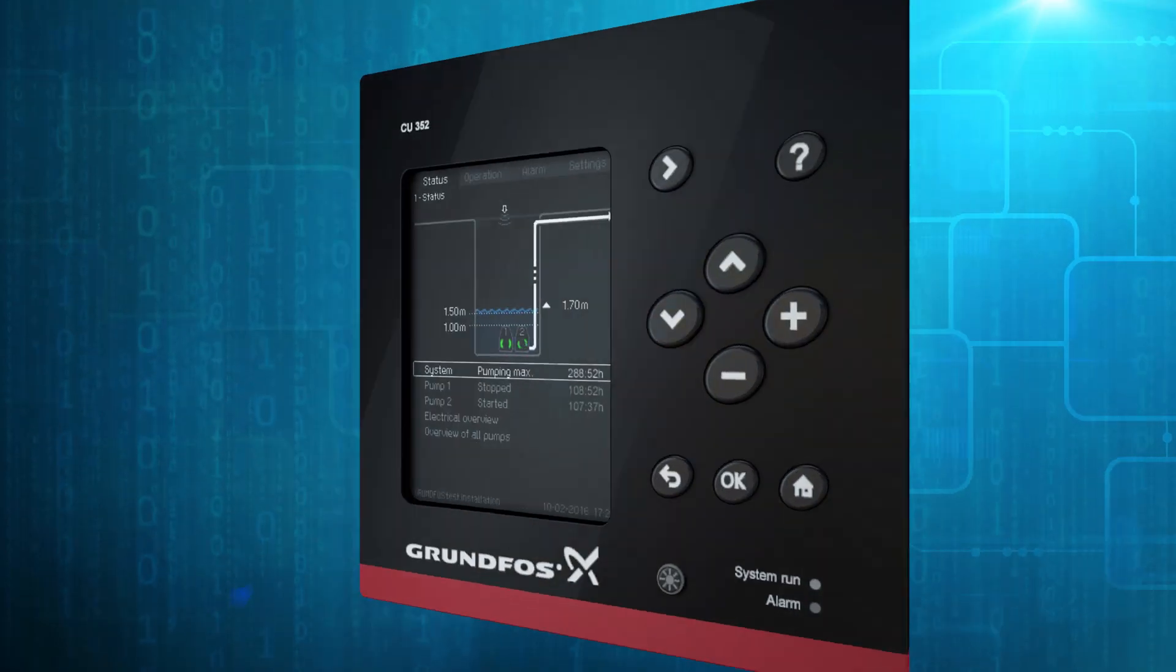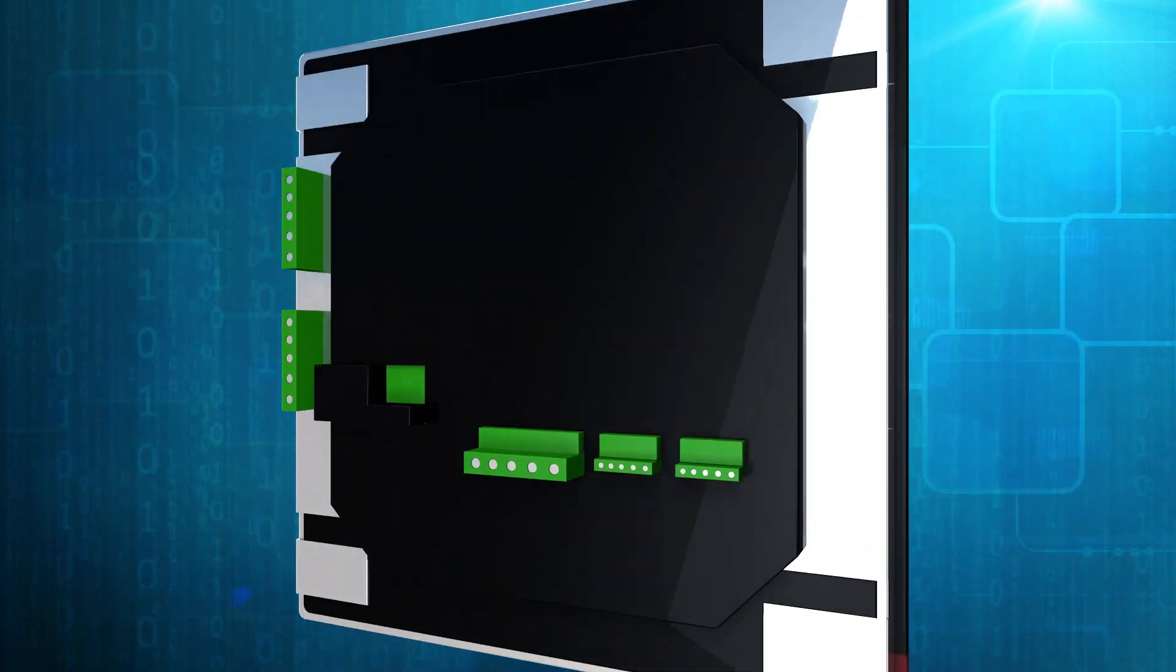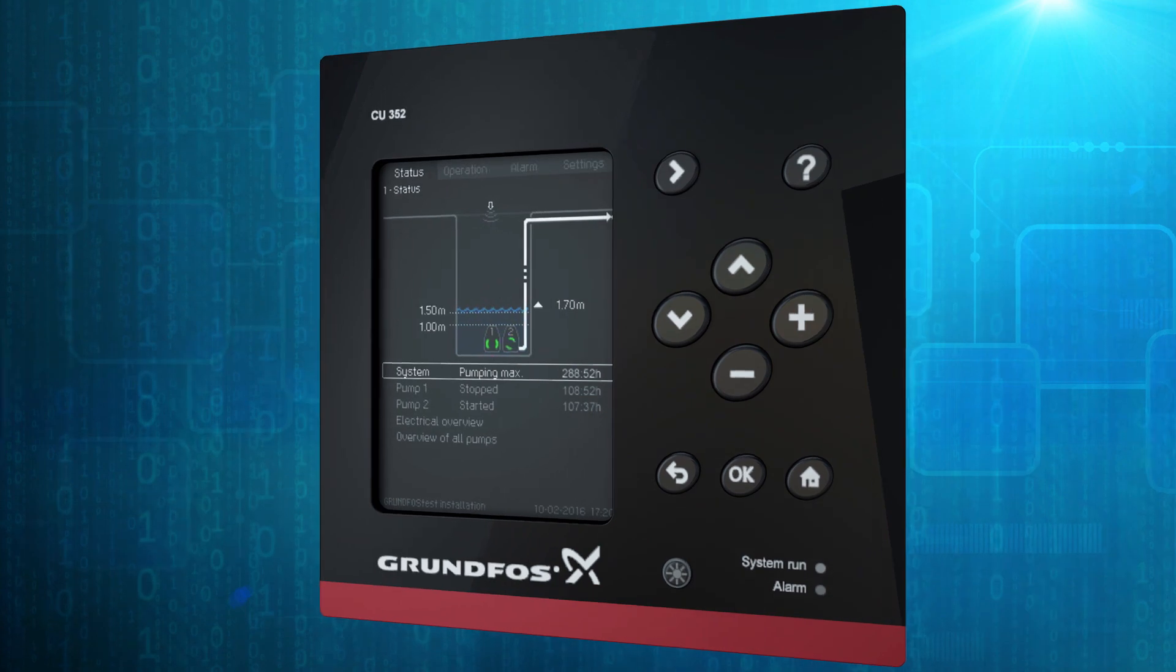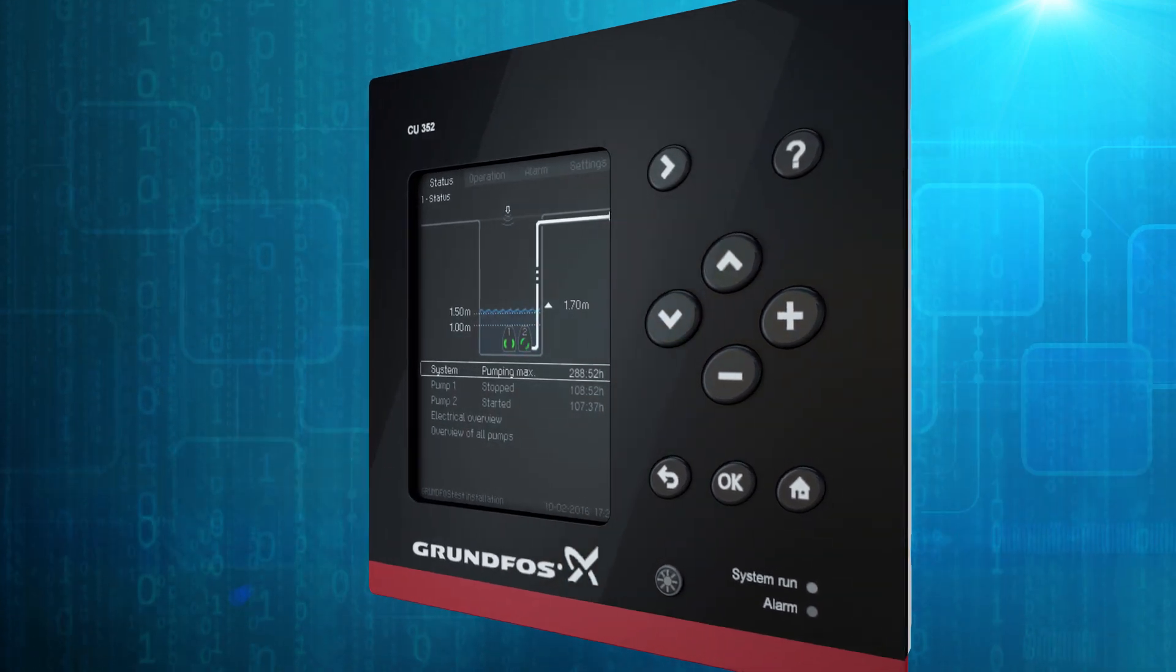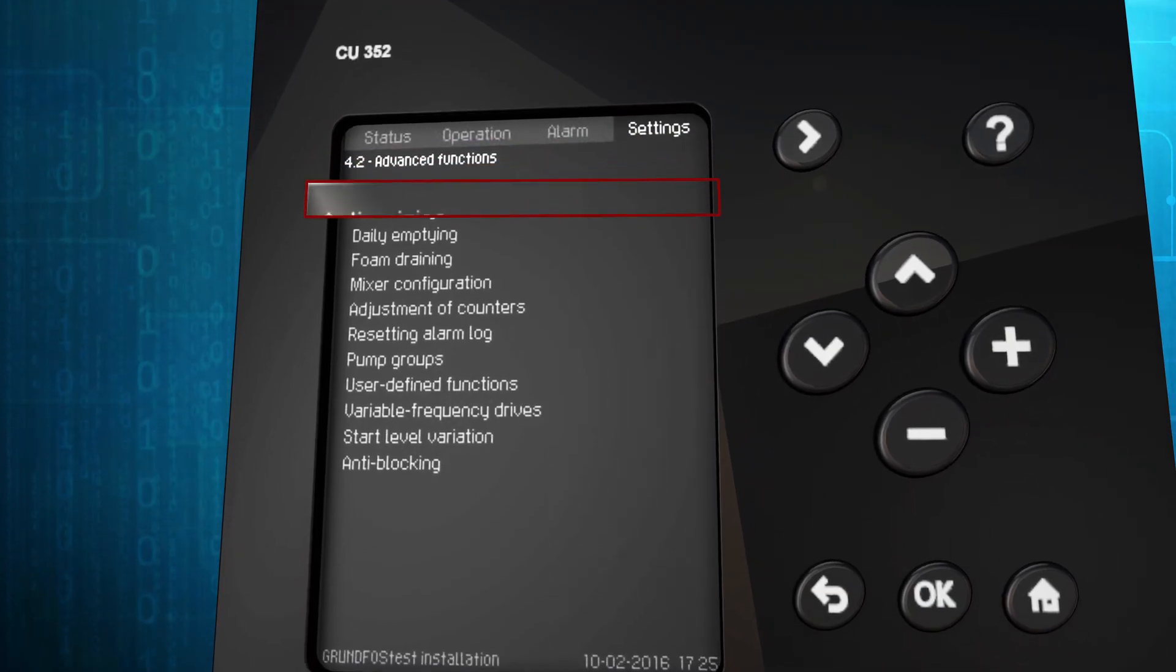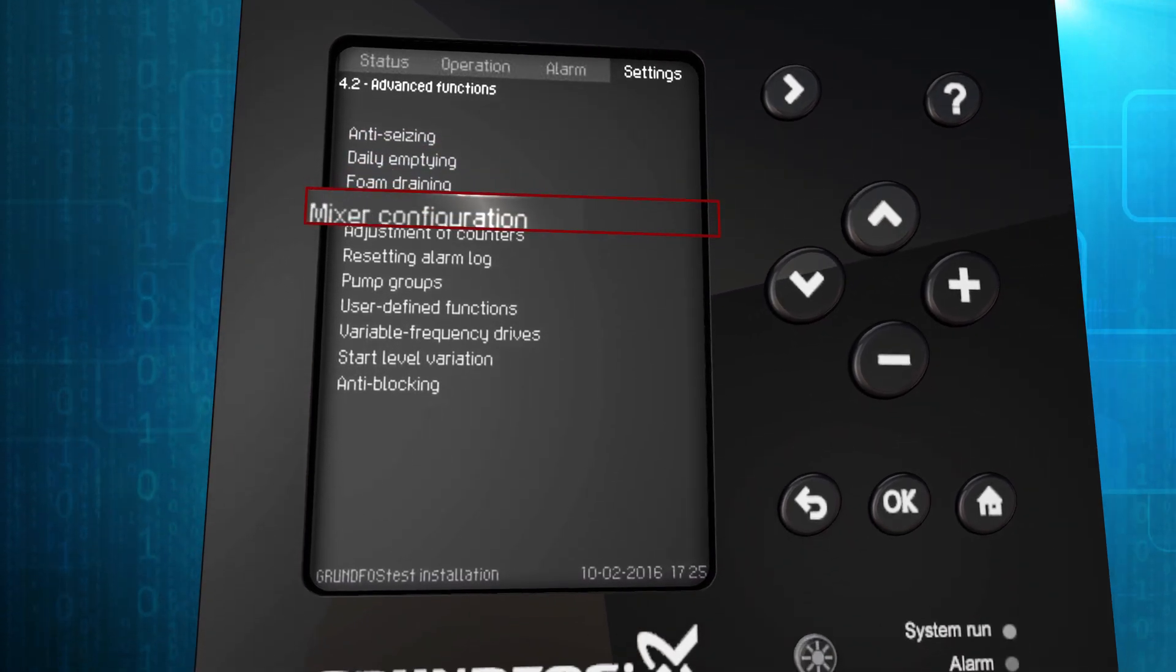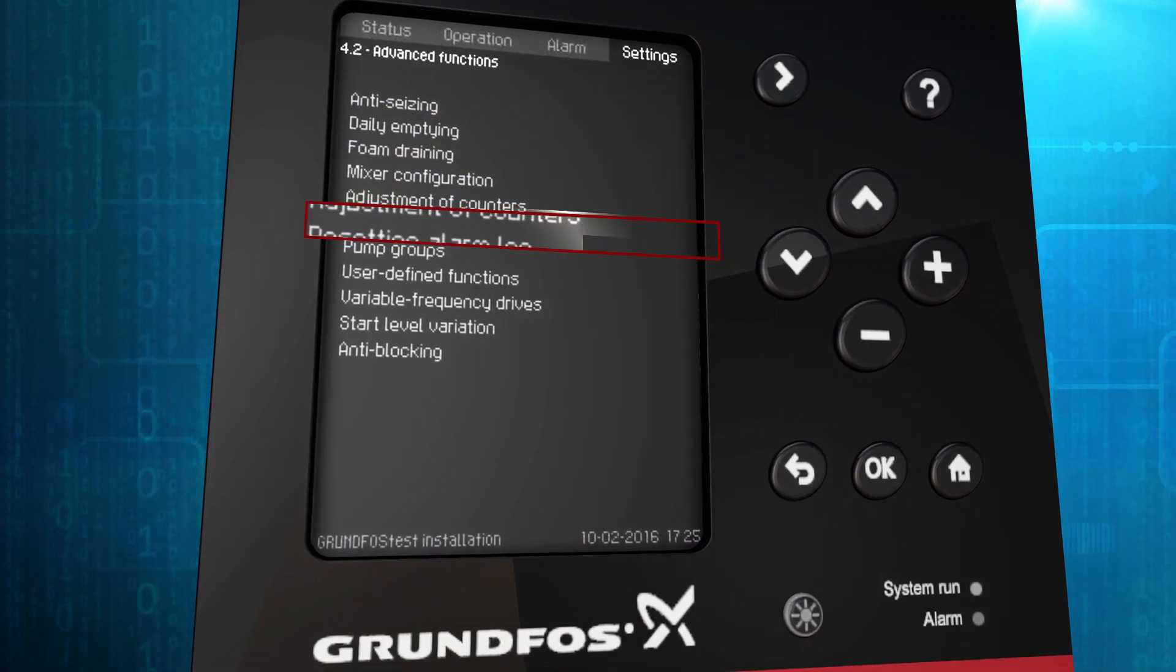The Grundfos Dedicated Control is an intelligent monitoring and control solution developed specifically for network pumping stations and commercial buildings. Thanks to its advanced functions, it proactively prevents problems before they surface, and drives pumping systems with the best possible efficiency, reducing operational cost to the minimum.